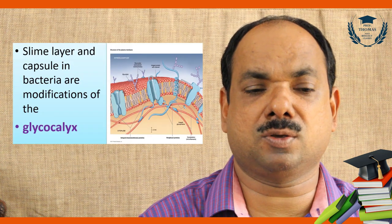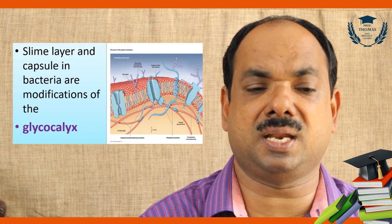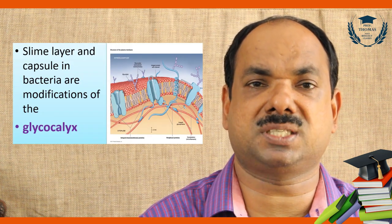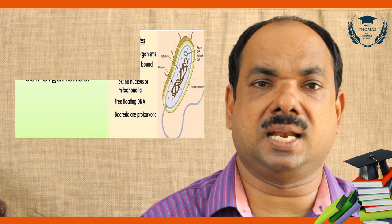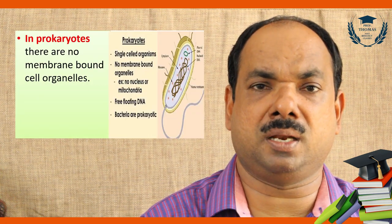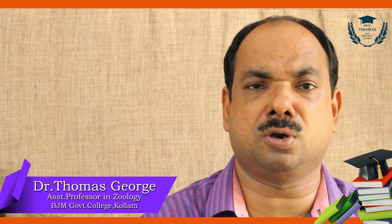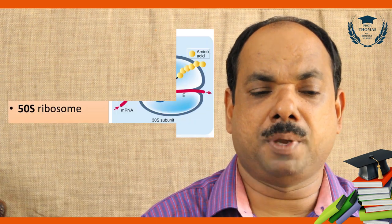The outer covering called the glycocalyx is sometimes a slime layer and sometimes a capsule. Prokaryotic cells lack a nuclear membrane, and the genetic material is called the nucleoid or genophore.